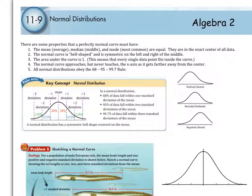In section 11.9, we are changing gears and going into what's called a normal distribution. A normal distribution follows a few set criteria.